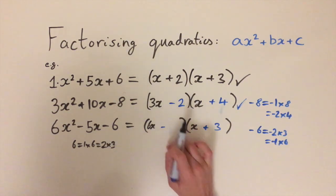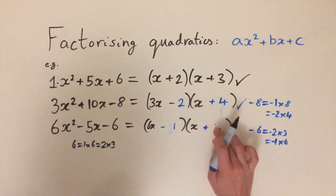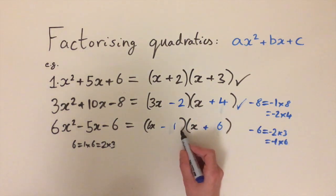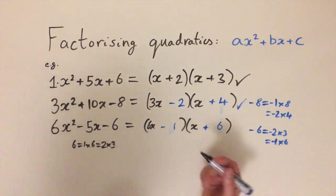How about if we do minus 1 plus 6? Well then we're going to get 36x minus 1 which is 35x. So that's way too big.